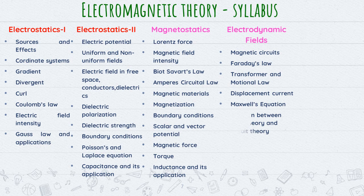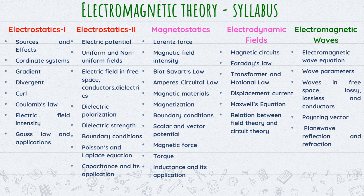The fourth unit covers Electrodynamic Fields — that means we are going to study Maxwell's equation and the different types of Maxwell's equations. Before Units 1, 2, and 3 it is a static field; Units 4 and 5 are Electrodynamic Fields where the field is dynamic. The fifth unit covers Electromagnetic Waves — wave propagation, wave parameters, etc.